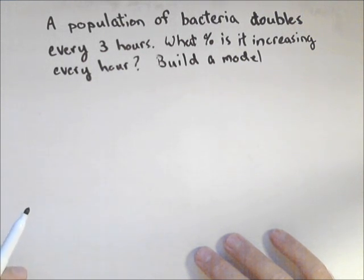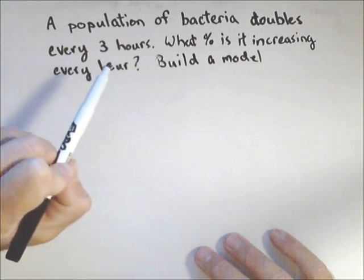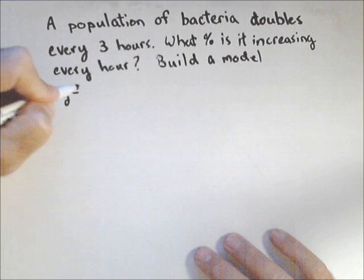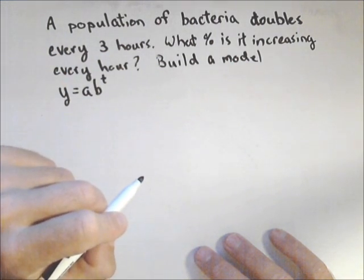It's kind of like we've got a compounded rate, but we want to know what its annual rate is. Now, we're going to use the form y equals ab to the t, where t is measured in hours in this case.